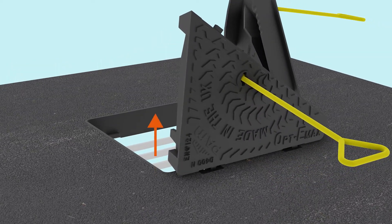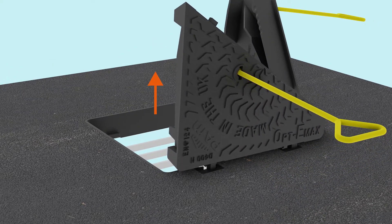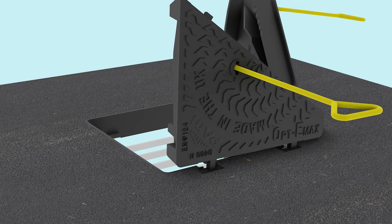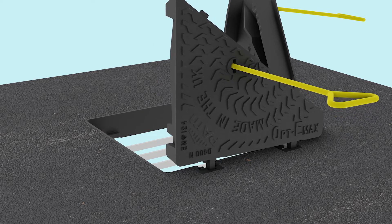When closing the unit, disengage the blocking feature by pivoting the cover section approximately 25mm and then lower it forward with the lifting key.